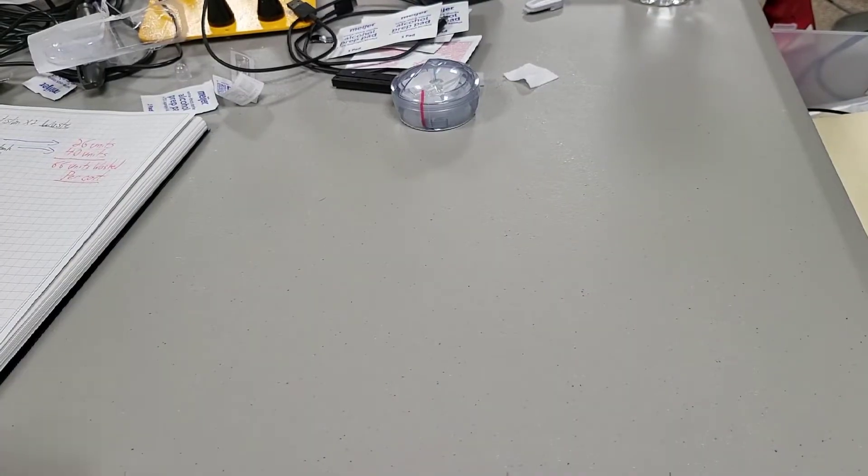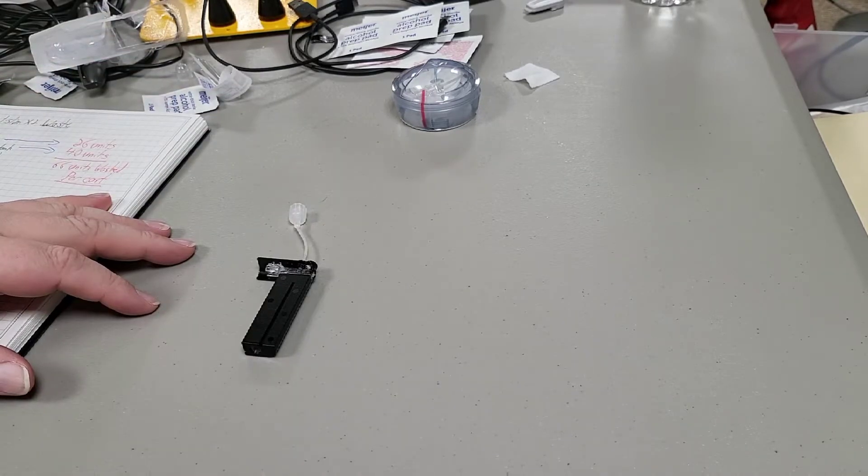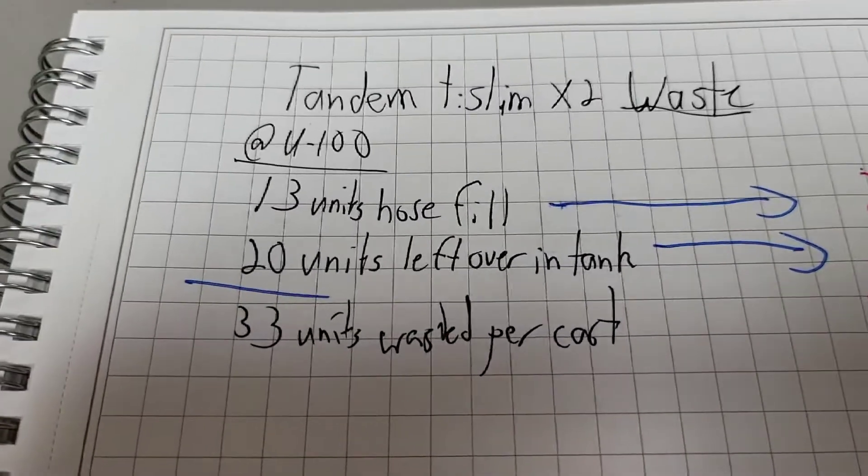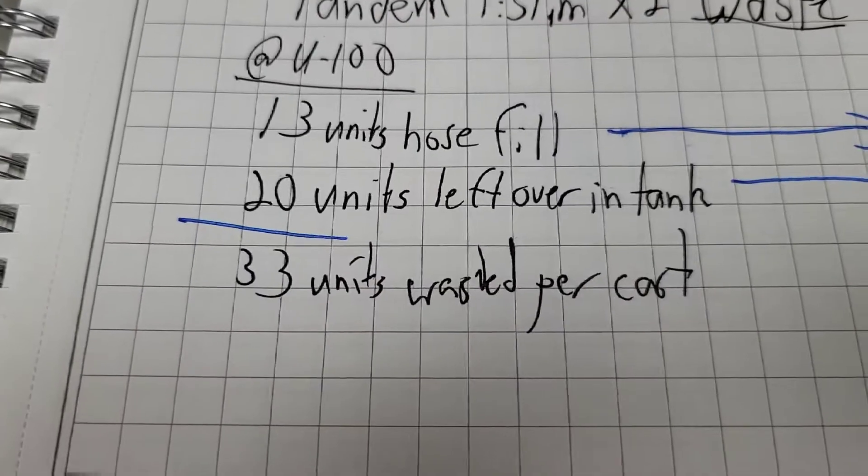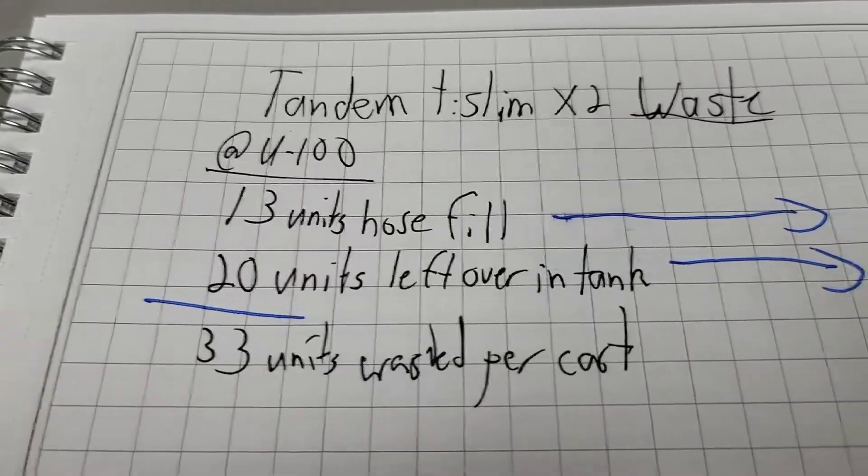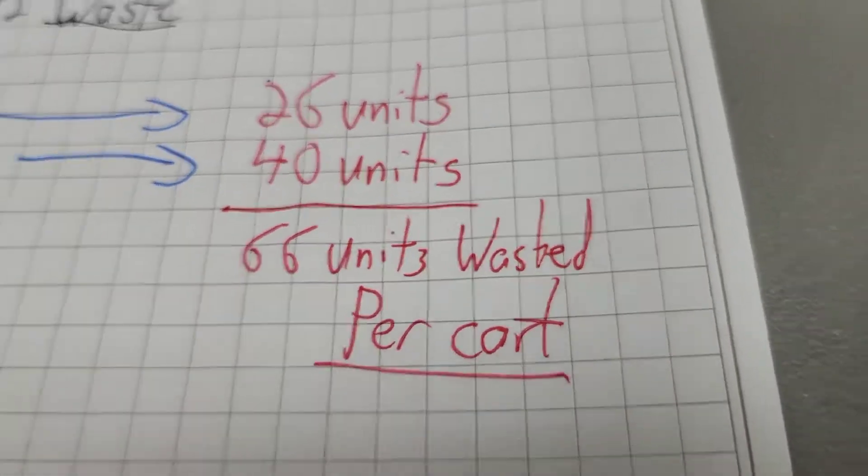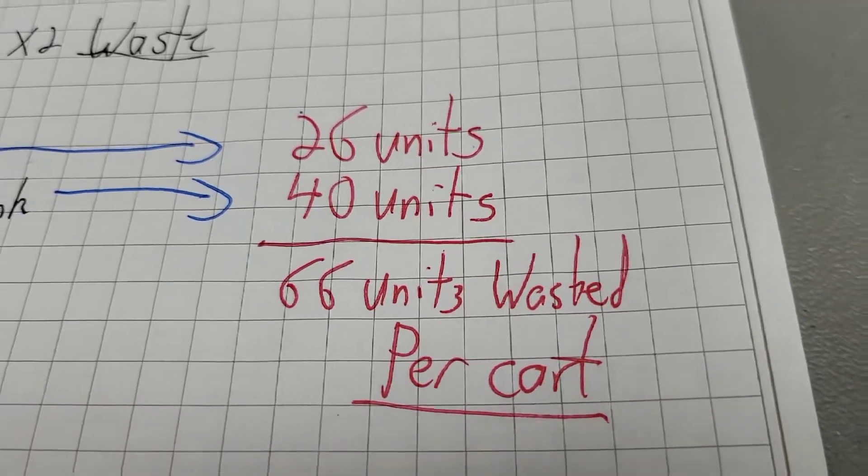If you're like me and you use 150 units a day, it lasts just a little bit over three days. But the Tandem is a fairly wasteful system. 33 units wasted per cartridge. That's every three days, 33 units are wasted. When you're using U200, that is 66 units of waste per cartridge.